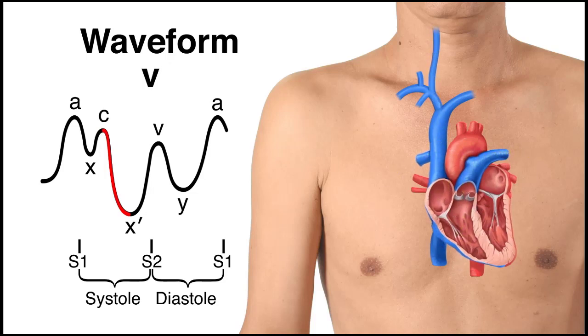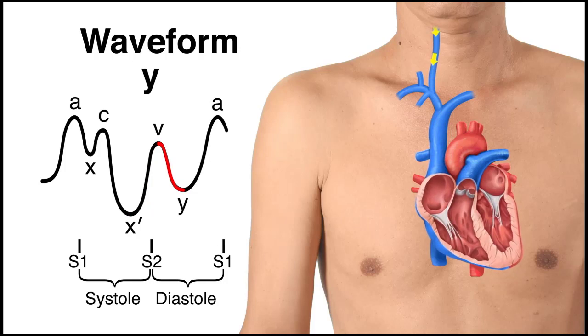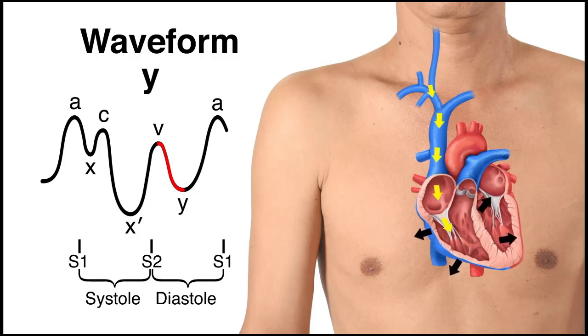The V wave corresponds to right atrial filling and the Y' descent, which begins during diastole, reflects the filling of the right ventricle after the opening of the tricuspid valve.